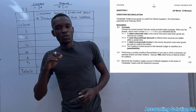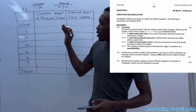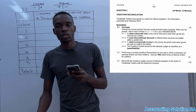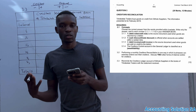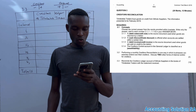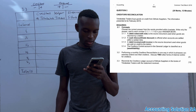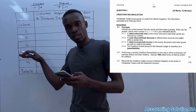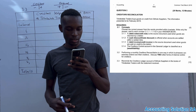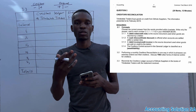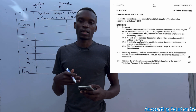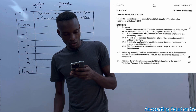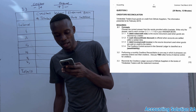Okay Grade 11 students, in this video we are going to discuss a creditor's reconciliation statement. This is the format that we have been given according to this question paper that was written in 2019 — it was a common test. As you can see on the required part, they said we are only looking at 3.3, which is the creditor's reconciliation statement. You can also attempt 3.1 and 3.2 and tell me in the comment section what you think the answer is.